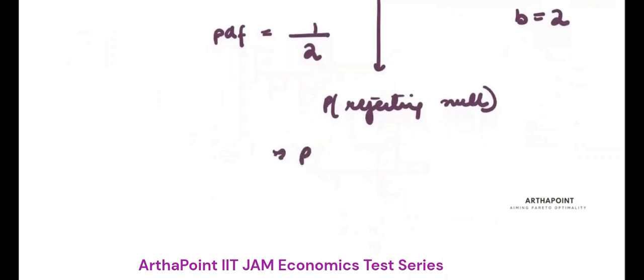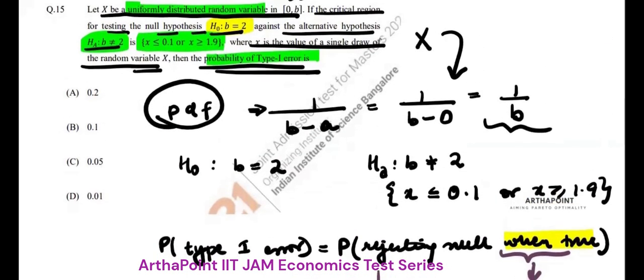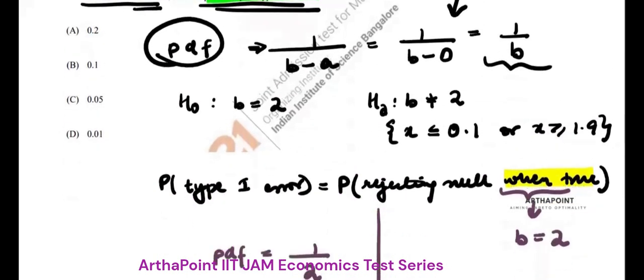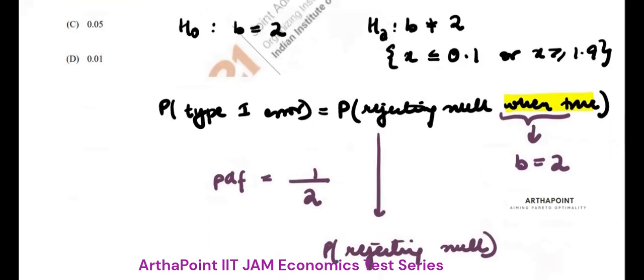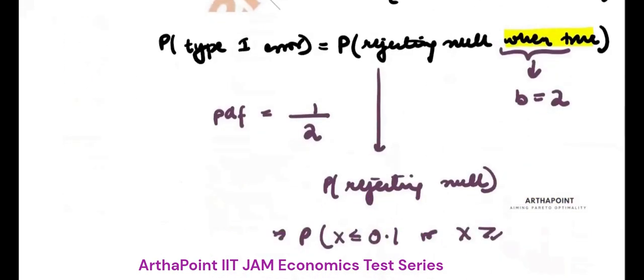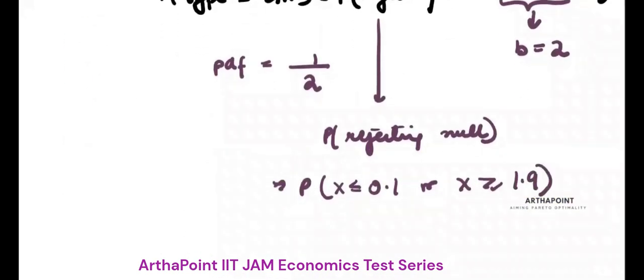You will reject null when either X is less than or equal to 0.1 or X is greater than or equal to 1.9. So this will be probability that X is less than or equal to 0.1 plus probability X is greater than or equal to 1.9.